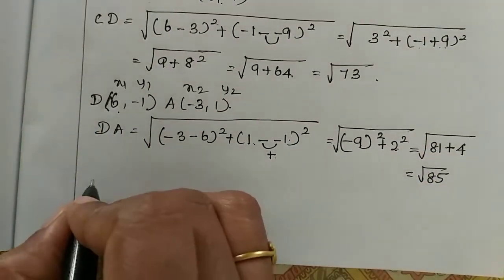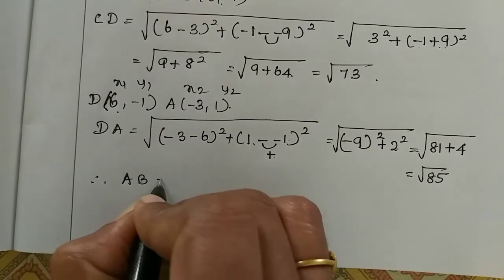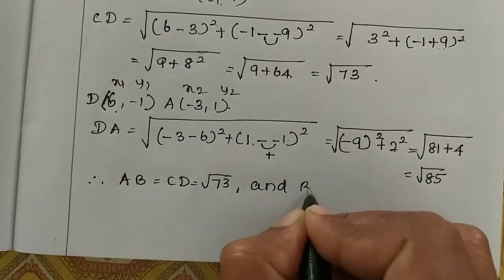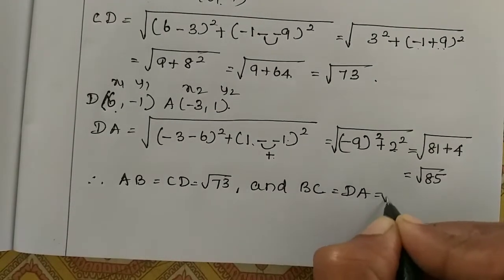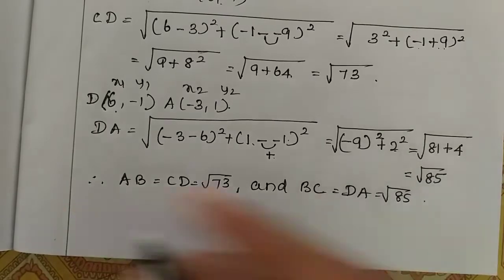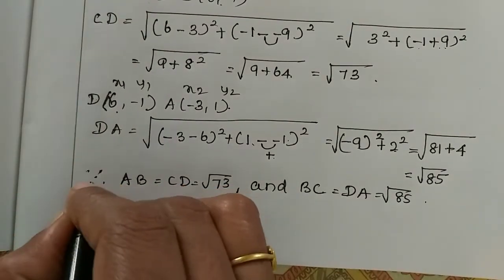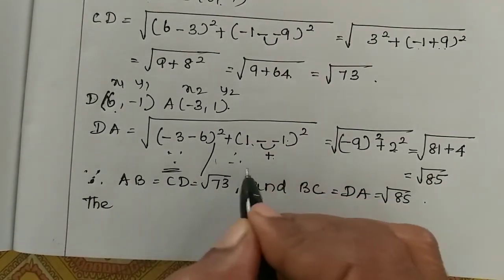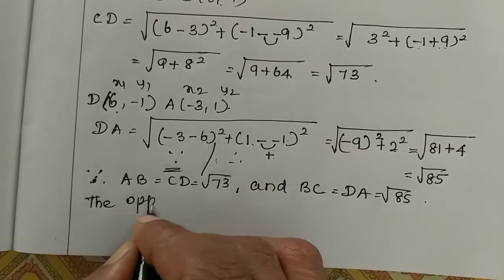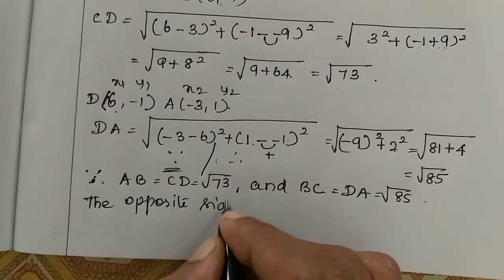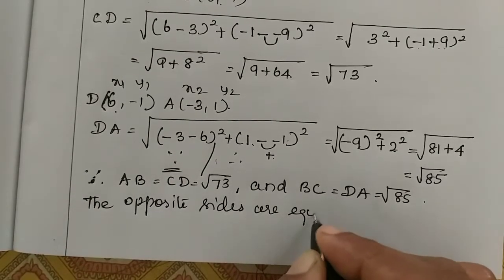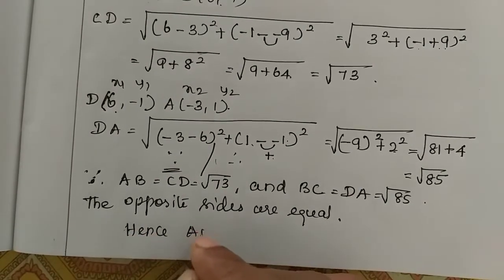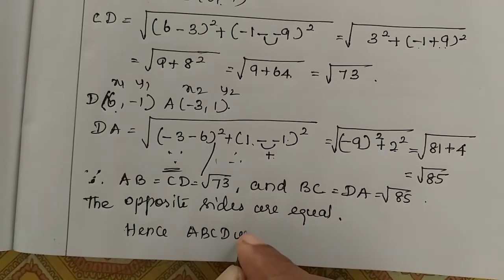Since AB equal to CD equal to root 73, and BC equal to DA equal to root 85, the opposite sides are equal. Hence ABCD is a parallelogram.